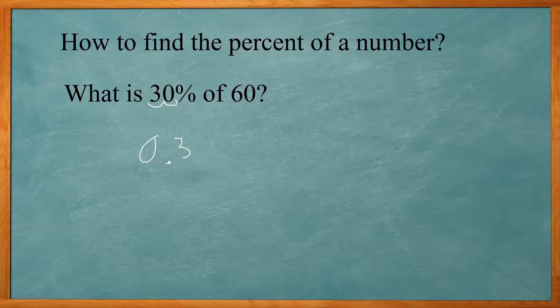And then I'm going to multiply it by the other number, times 60. Put that in your calculator and you'll get 18. So, to find a percentage of a number, change the percent to decimal and multiply that by the other number.